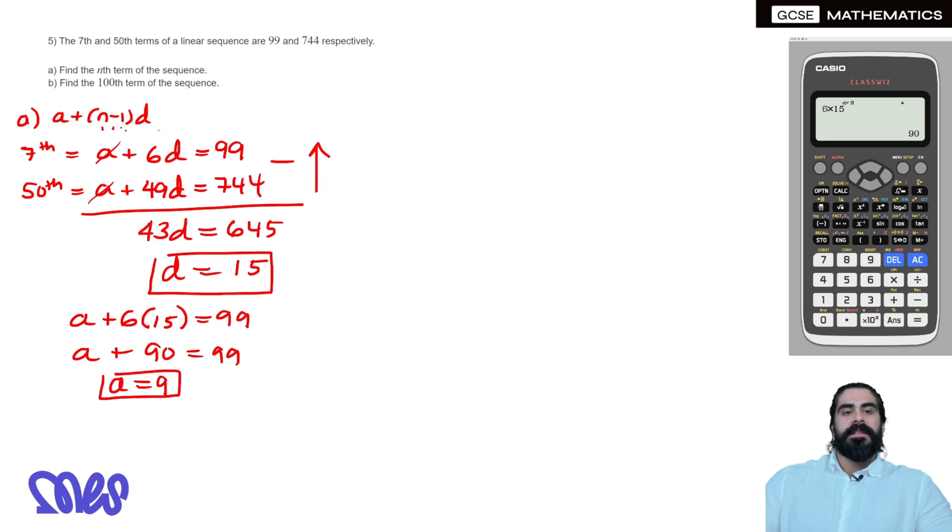But don't forget they wanted the nth term. The nth term, remember at the beginning, was A plus N minus 1 D, so it's 9 plus N minus 1, and D is 15. Multiplying the 15, so you've got 9 plus 15 times N is just 15N, 15 times minus 1 is minus 15. So the nth term, 9 minus 15 is minus 6, so I'm going to write the 15N first, 15N minus 6.